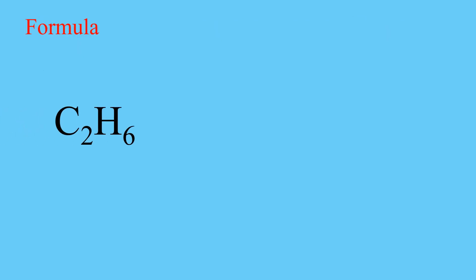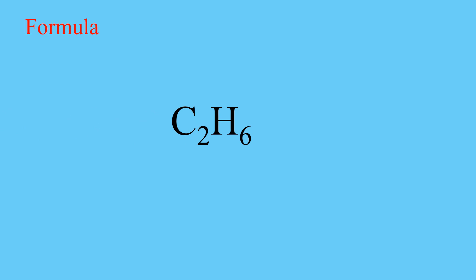The chemical formula of ethane is C2H6. This is the chemical formula of ethane, which has two carbon atoms attached with six hydrogen elements.